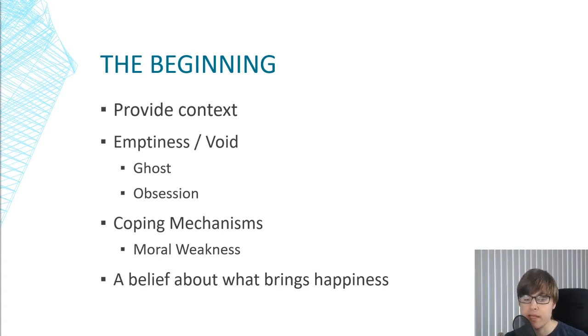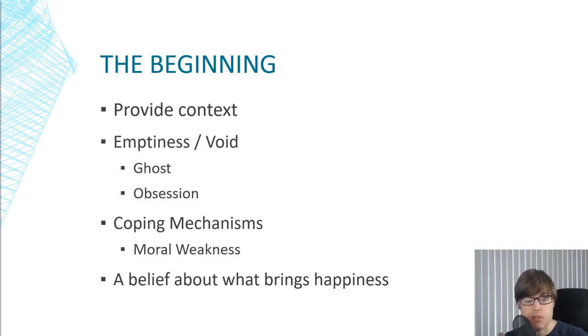We first have to see how the character is flawed in order to see how they will become unflawed or fix that flaw in their personality. Likewise, if you're doing a negative arc, make sure we see how the character is not flawed so that we can see how they will become corrupted.